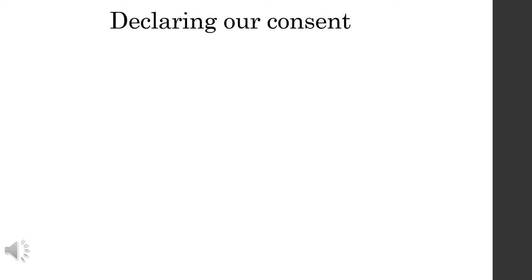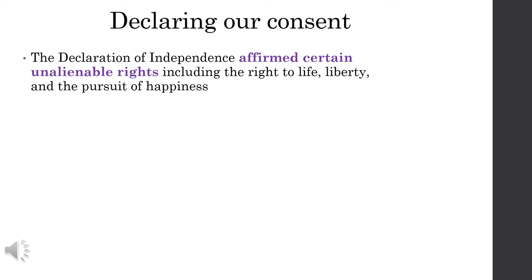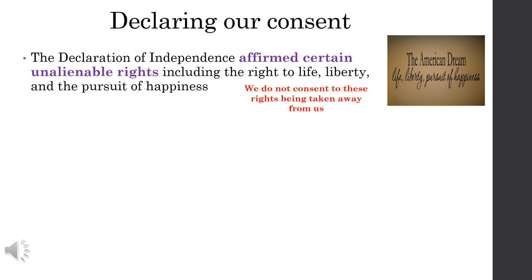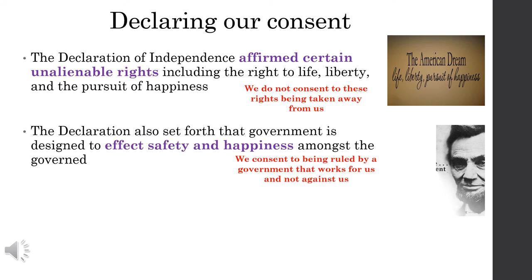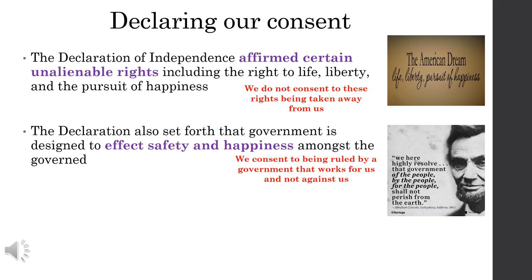The Declaration of Independence does one more important thing, and it has nothing to do with declaring independence. It is when we first say what type of government we consent to be ruled by. The Declaration affirmed certain unalienable rights, including the right to life, liberty, and the pursuit of happiness — what we call the American dream — and we specifically say we do not consent to these rights being taken away. The Declaration also set forth that government is designed to affect safety and happiness amongst the governed. We consent to being ruled by a government that works for us, not against us. As Lincoln said: government of the people, by the people, for the people, shall not perish from the earth.